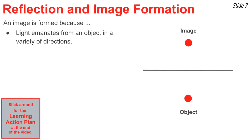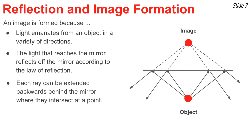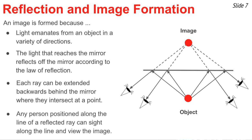So let's summarize how an image is formed by the reflection of light. An image is formed because light emanates from an object in a variety of directions. Now some of the light that comes from the object actually hits the mirror. And if it does, it will reflect off the mirror according to the law of reflection. And each ray can be extended backwards behind the mirror where it intersects at a point, a point known as the image location. Any person positioned along the line of a reflected ray can look along that line and can sight backwards to view the image of the object.